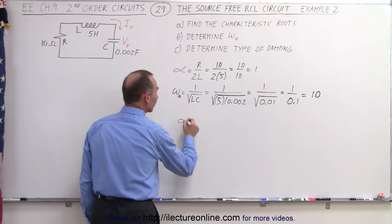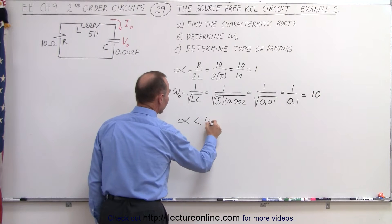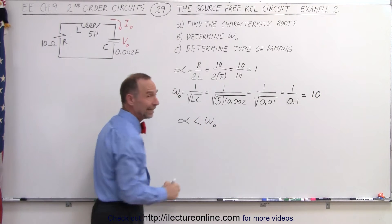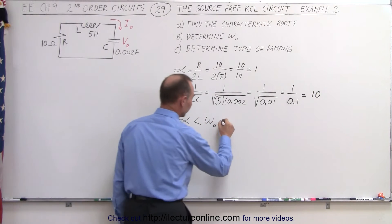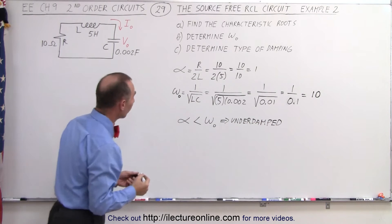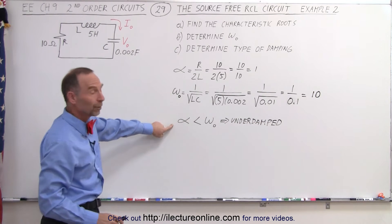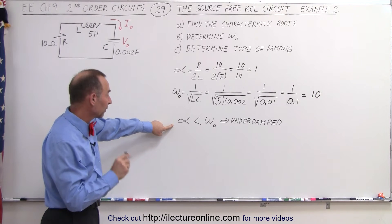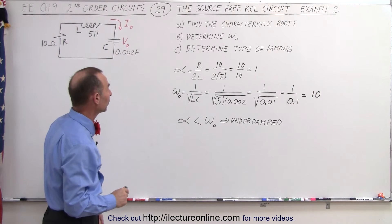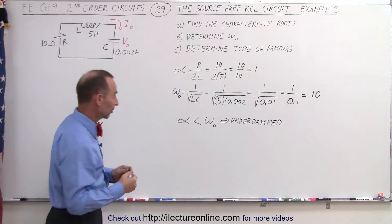Since our damping factor is smaller than the natural frequency, this would then indicate that it's underdamped. So we have determined the natural frequency, we have determined that it's underdamped because we have a small damping factor relative to the natural frequency, and finally, the characteristic roots.